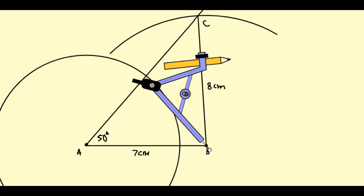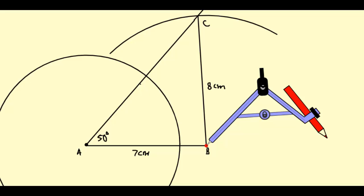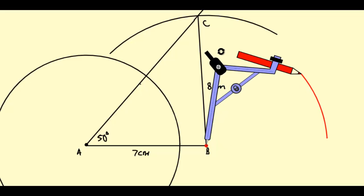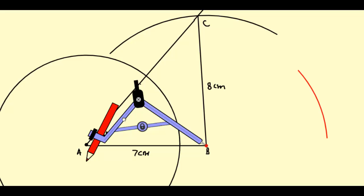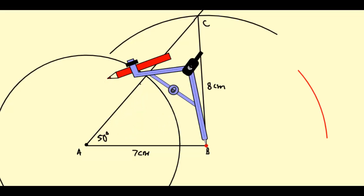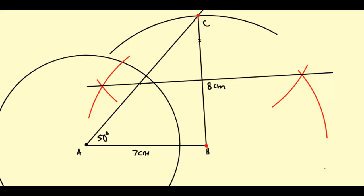To draw a perpendicular bisector of a line, we have to open the compass more than half of that line. So we open the compass more than half of line BC. Now draw an arc on one side of line BC, and then without disturbing the compass, draw a second arc on the other side of line BC. Now join the points of intersection of these arcs. This is the perpendicular bisector of line BC.